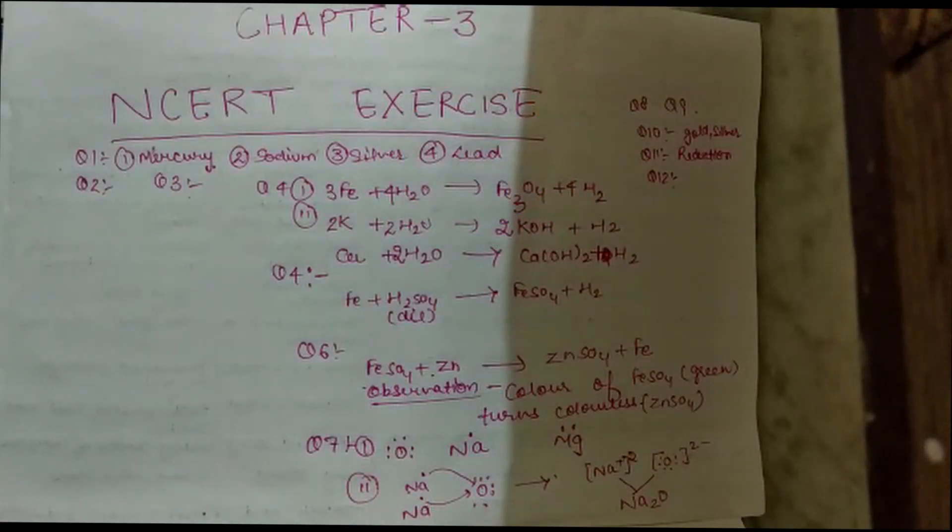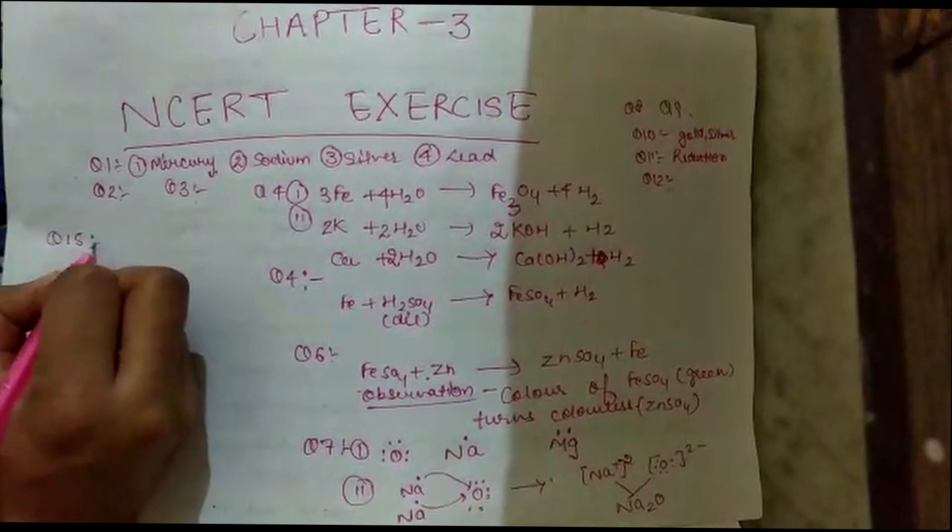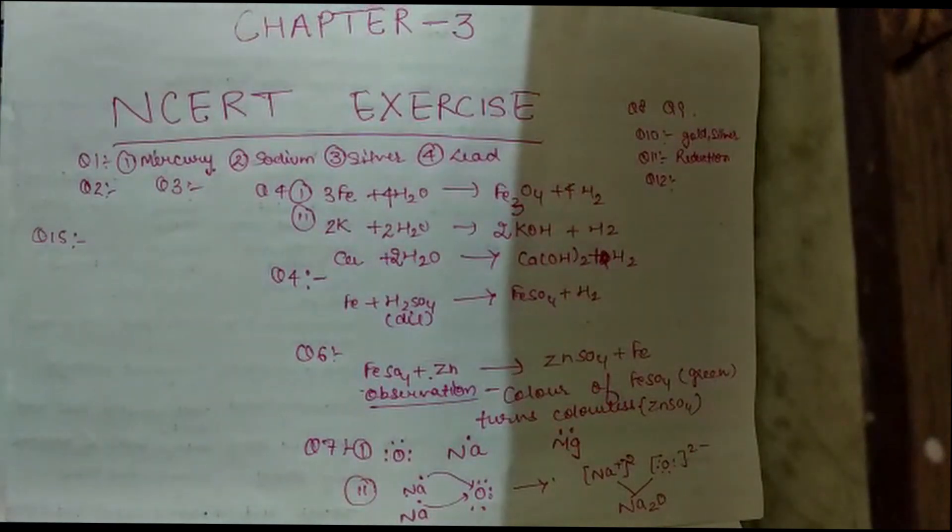Hello everyone, in the previous lecture we discussed the NCERT in-text questions. Today we will start discussing the NCERT textbook questions. We have one last pending question from the in-text section, question number 15, about samples of four metals A, B, C, and D that were taken and added to the following solutions one by one.